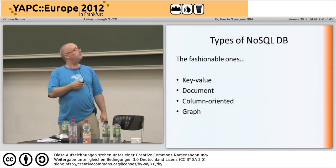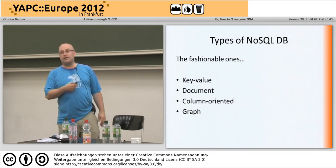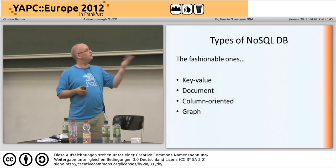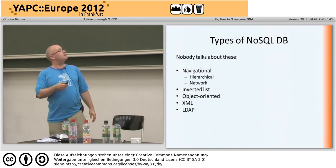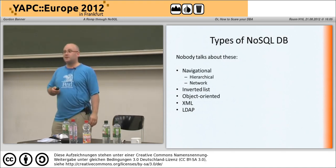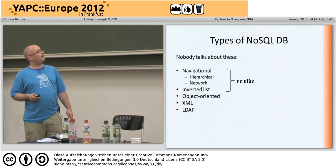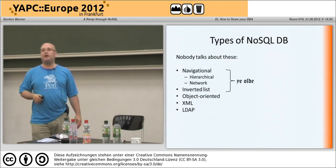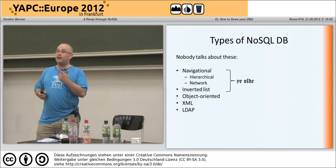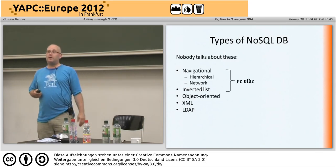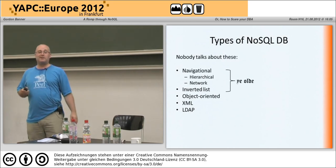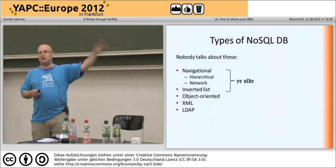Let's talk about the varieties of NoSQL databases. The currently fashionable categories are: key-value stores, document stores, column-oriented, and graph. Then there are the ugly cousins — navigational databases and similar — mostly mainframe world pre-1980. It was big, fast, and actually worked. If you look at IMS and similar systems now, they still have a huge footprint of data around the world and are certainly not relational. But that's not part of this discussion.